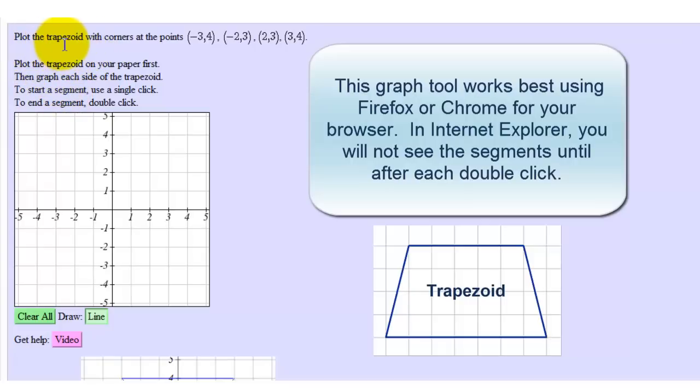We're going to plot the trapezoid, which is a quadrilateral or four-sided polygon with one pair of parallel sides, with corners at the points negative 3, 4, negative 2, 3, 2, 3, and 3, 4.